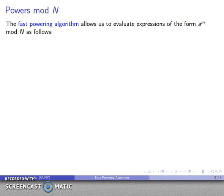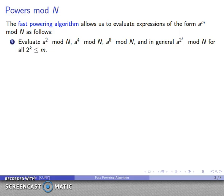In general the idea is that I can evaluate an expression of the form a to power m mod n in the following way. What I can do first of all is I can evaluate a squared, a to the fourth, a to the eighth, and in general a to power 2^k mod n for all 2^k that are less than the exponent that we're interested in.